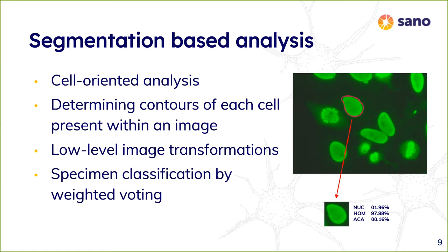Cell segmentation focuses on extracting information about each cell separately. First, we get the exact contours of each cell, then after every single cell is extracted from an image, we classify each cell separately. After that, we aggregate the partial results using majority voting or weighted voting, where weights represent the model's confidence that a certain cell actually represents a given staining pattern. This approach consists mostly of low-level image transformations like filtering, convolution, and edge detection.